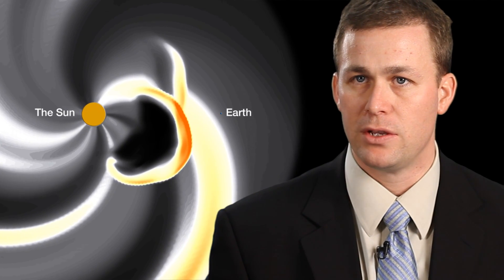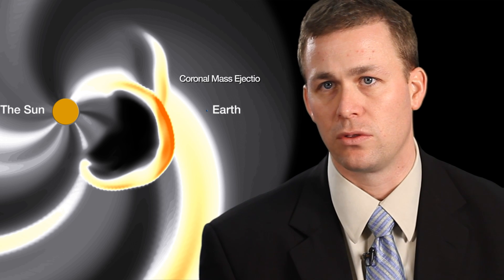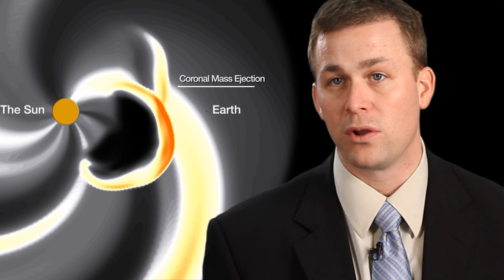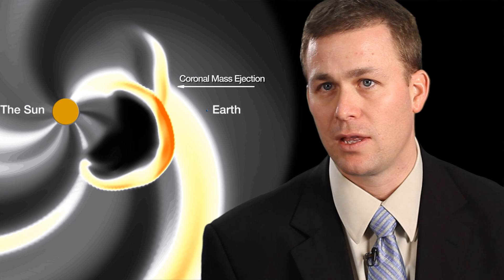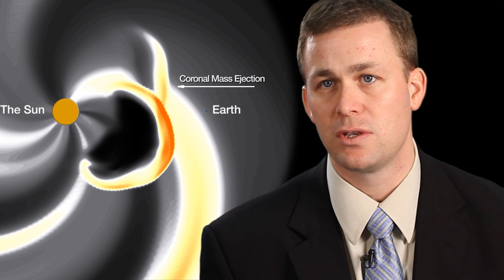Coronal mass ejections are one part of space weather that gets a lot of attention. A cloud of mass, billions of tons, is being ejected from the sun and coming towards Earth. This can come off at anywhere from one to five million miles an hour, making that 93 million mile trip in anywhere from 17-18 hours in the fastest cases up to several days.